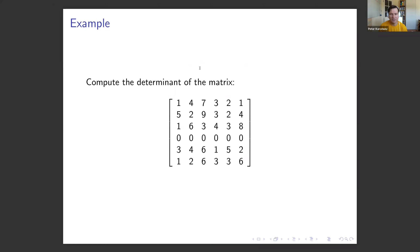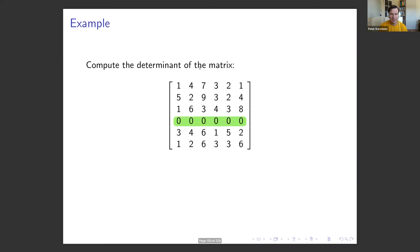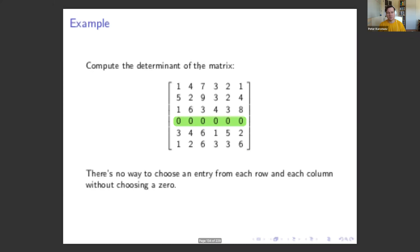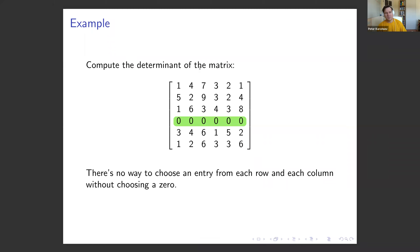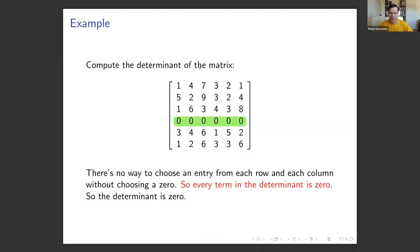Obviously complexity increases with matrix size. For a 6x6 matrix that contains a row of all zeros, observe that there is no way to choose an entry from each row and each column without choosing a zero. So every product in the determinant sum necessarily contains a zero, every term vanishes, and the whole determinant equals zero.